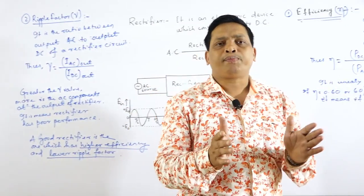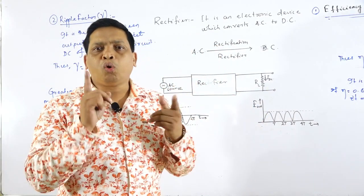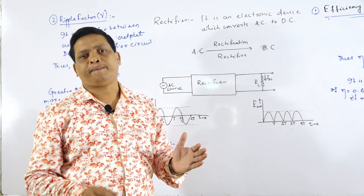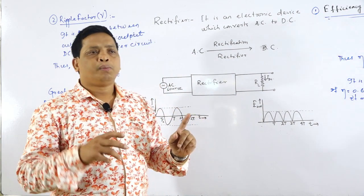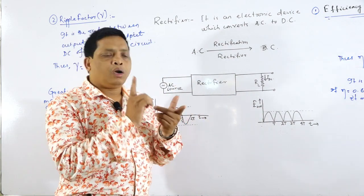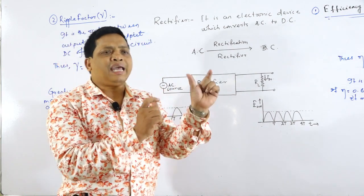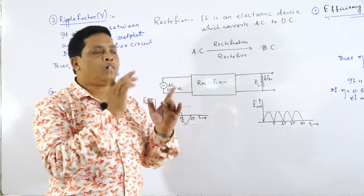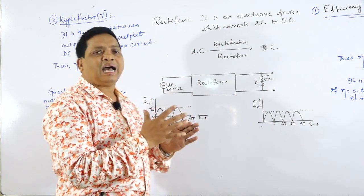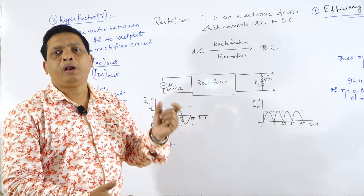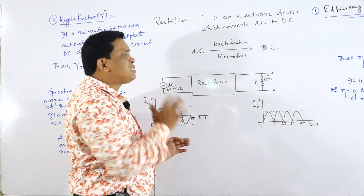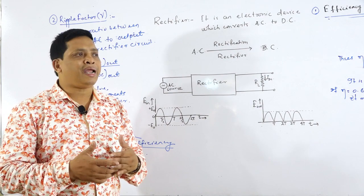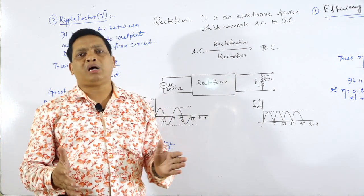A good rectifier is one which has higher efficiency and lower ripple factor. Higher efficiency means it gives more output DC power, and lower ripple factor means less AC components are present at the output in comparison to DC. In my next lecture, I shall be explaining to you the working of a P-N junction as a rectifier.